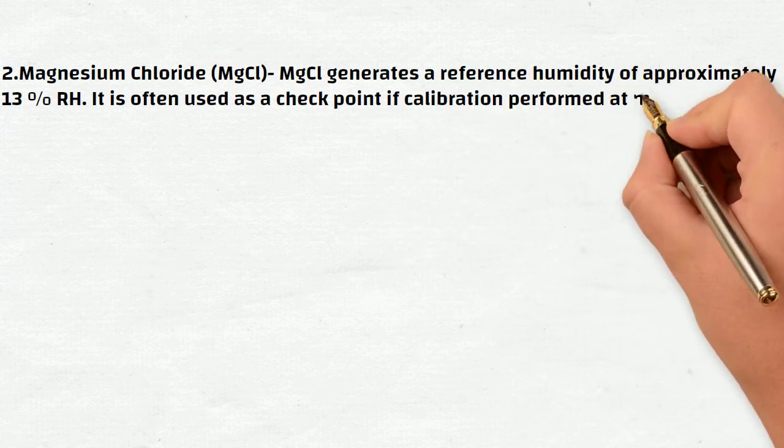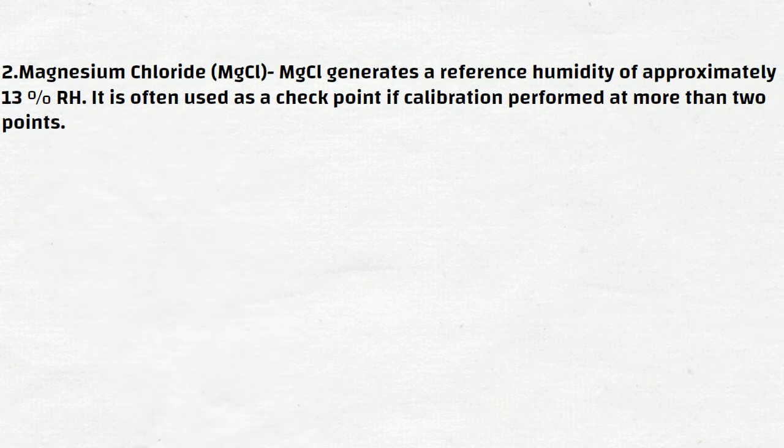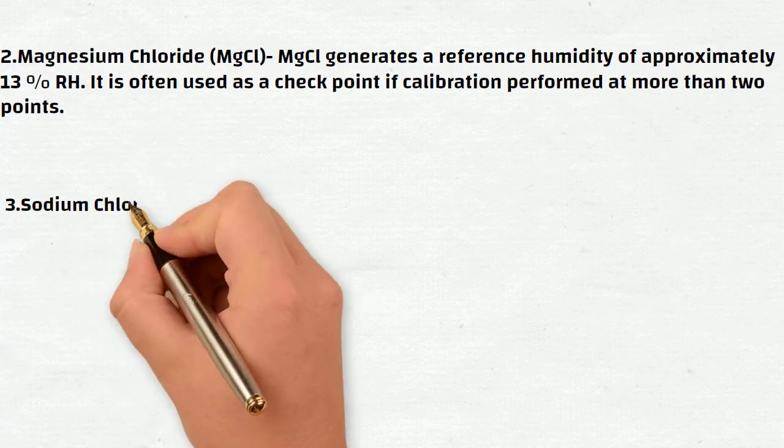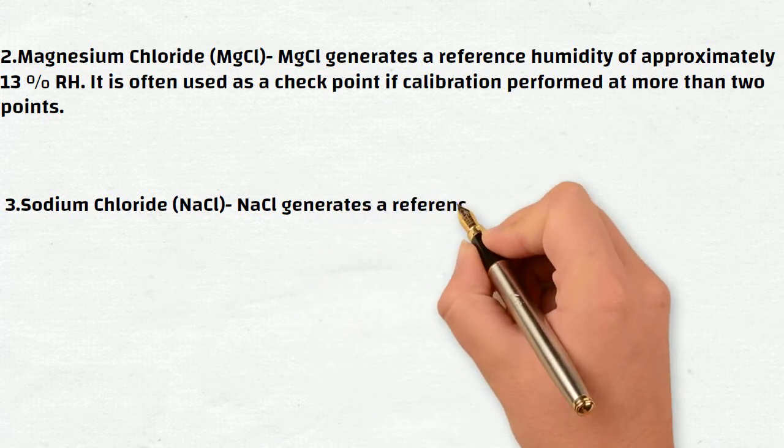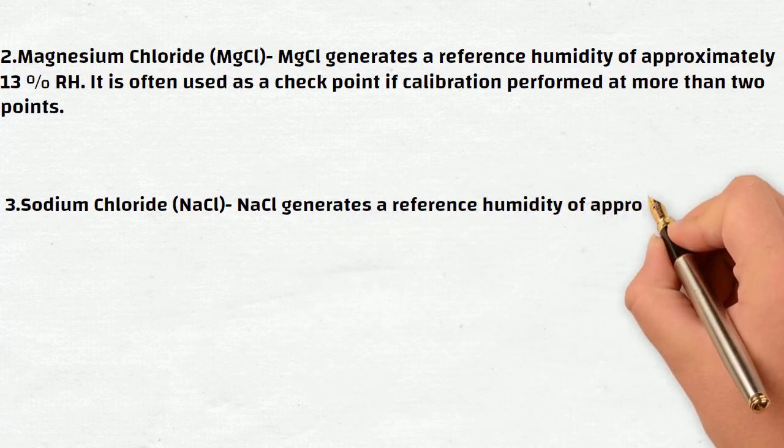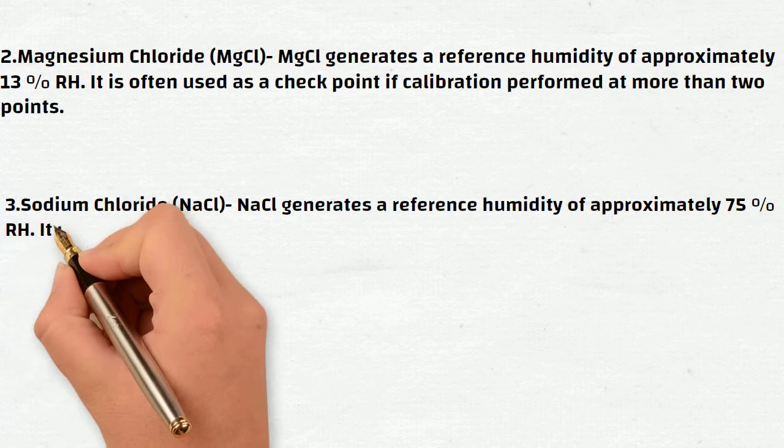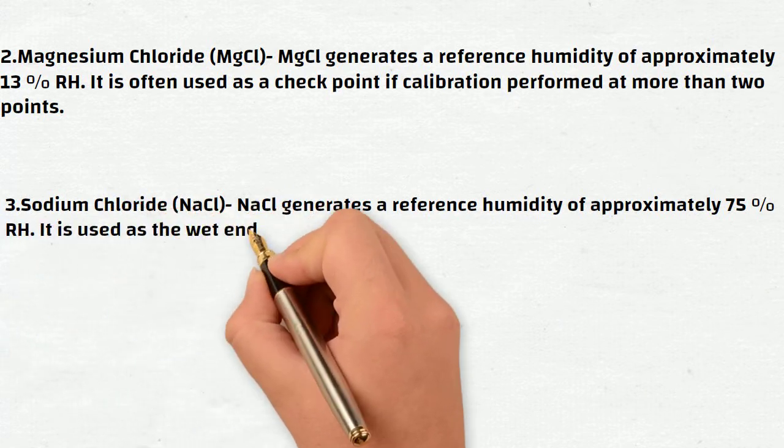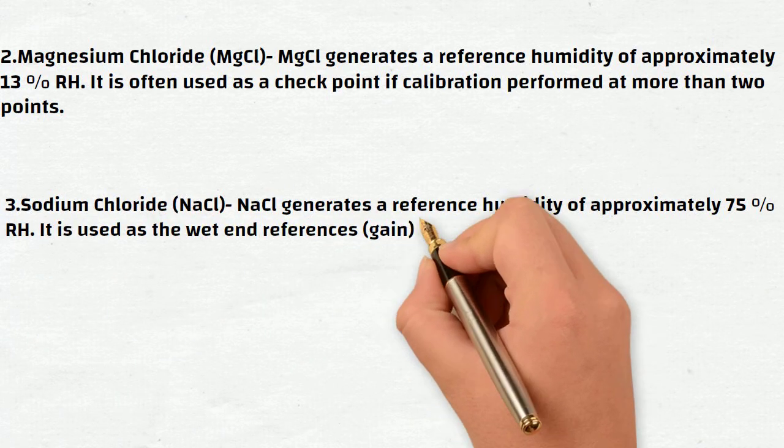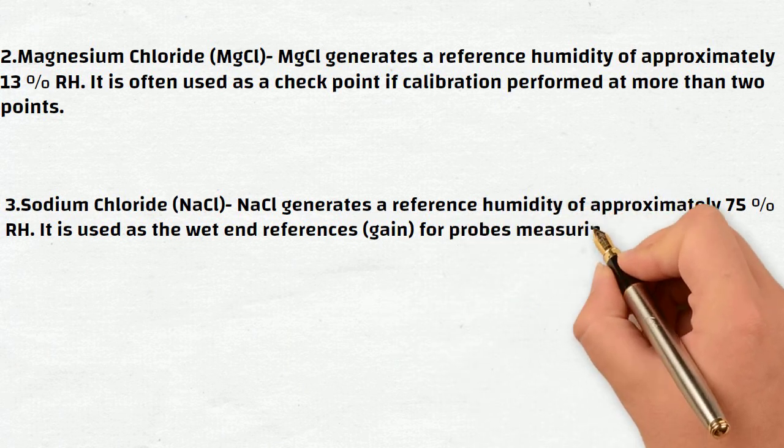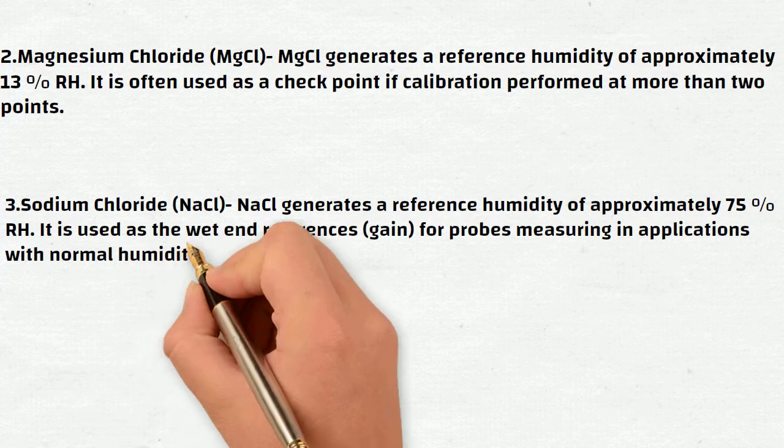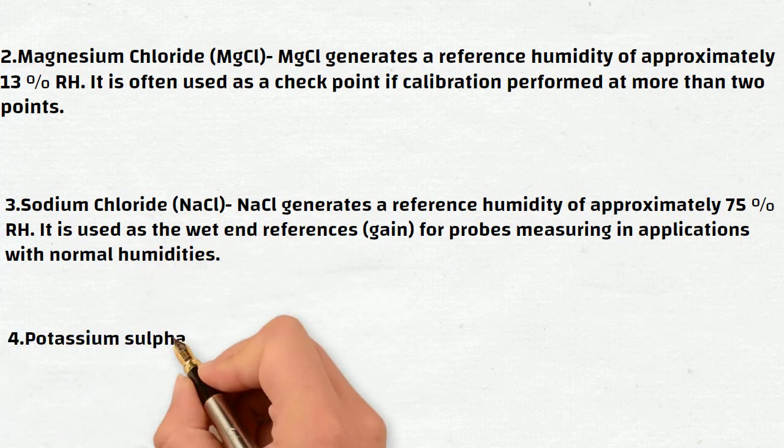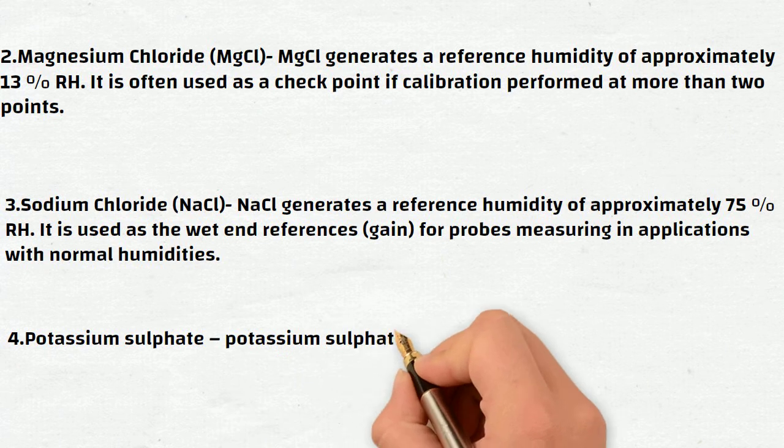Third, sodium chloride NaCl. NaCl generates a reference humidity of approximately 75% RH. It is used as a wet end reference for probes measuring in applications with normal humidities. Fourth, potassium sulphate. Potassium sulphate generates